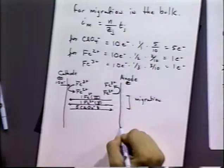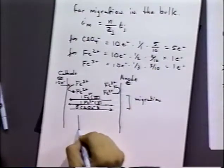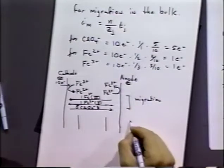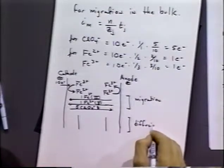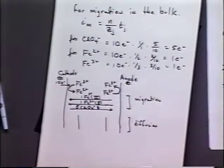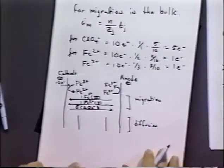There is, however, also the consideration what happens at the interface, and here we have to consider a diffusional process. Because the iron three plus and two plus are being used up at the interface, or produced at the interface, now we have some diffusion effects.